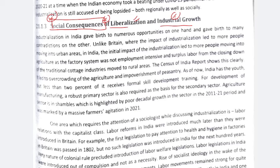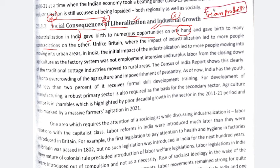Industrialization in India gave birth to numerous opportunities on one hand and many contradictions on the other. There is a paradox with industrialization — although opportunities were made and industrial growth occurred, jobs were also created, and people started to get work. Basically, industrialization means mass production of goods — mechanized or machine-made goods which produce in large quantities. But there were a lot of contradictions with it.